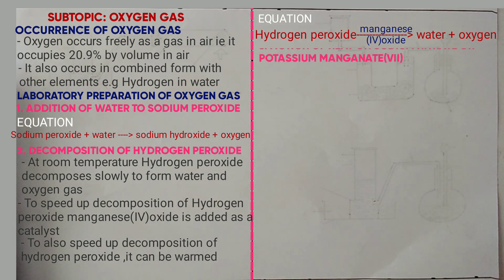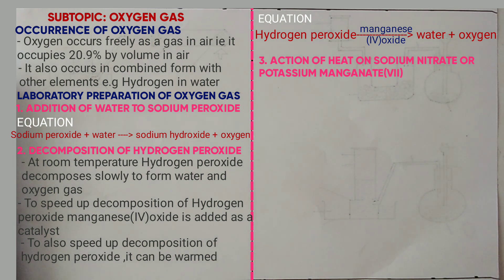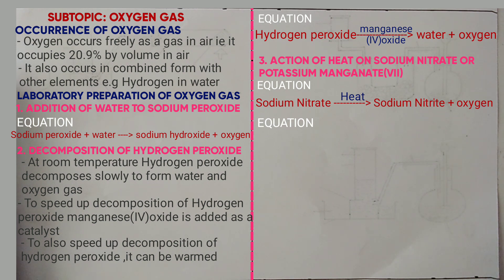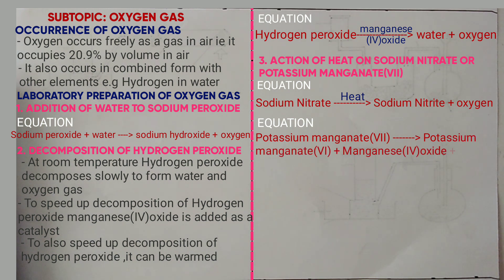Method number three is the action of heat on either sodium nitrates, potassium nitrates, or potassium manganate 7. The equation for action of heat on sodium nitrate is: sodium nitrate → sodium nitrite plus oxygen gas. For potassium manganate 7, the equation is: potassium manganate 7 → potassium manganate 6 plus manganese dioxide plus oxygen gas.